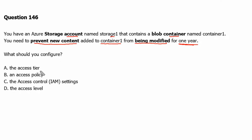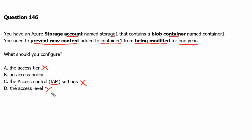Option A: the access tier — the access tier is used with Azure Storage to store blob data in a cost-effective manner, so it is incorrect. Option C: access control or identity and access management settings — these are used to provide secure and controlled access to resources for users, also incorrect. Option D: access level — this is used in DevOps and is not applicable for content modification management. Therefore we are left with option B.